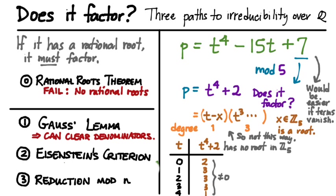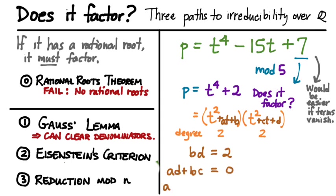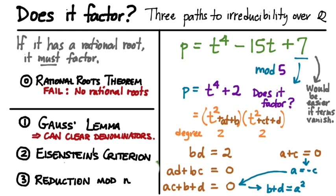The only other way p could factor is as a product of two degree 2 polynomials. Because the leading term is t to the 4th, each factor has leading term t squared. Let's suppose this were possible: the factors are t squared plus at plus b and t squared plus ct plus d. Multiplying out and equating coefficients to t to the 4th plus 2 gives us: b times d equals 2 from the constant terms; a times d plus b times c equals 0 from the degree 1 terms; a quadratic relationship from the degree 2 terms; and a plus c equals 0 from the cubic terms. If a equals negative c, then b plus d has to equal a squared.